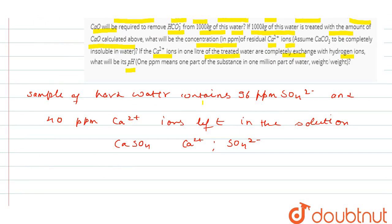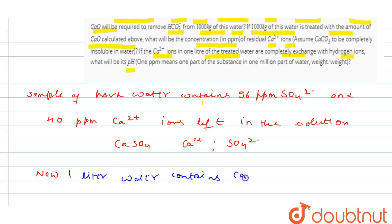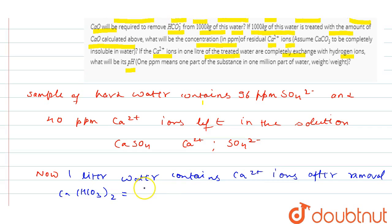Now, 1 liter of water contains Ca²⁺ ions after removal. We calculate after removal. I will give you a formula. Ca(HCO₃)₂: 40 into 10 to the power 3, because we are doing all this in grams, divided by 10 to the power 6 for the conversion of ppm to grams. So it will come out to 40 into 10 to the power minus 3 grams.